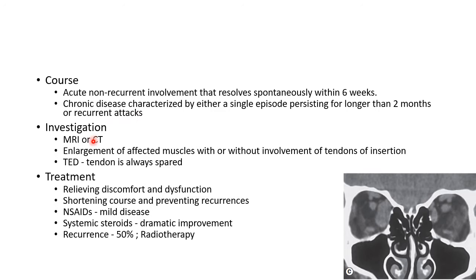CT or MRI can be done to diagnose orbital myositis. CT shows enlargement of the affected muscles with or without involvement of the tendons of insertion. An important distinction: in thyroid eye disease the tendon is always spared, whereas in orbital myositis the tendons may or may not be involved.